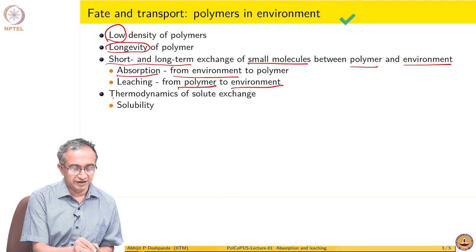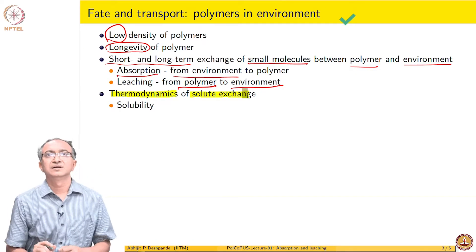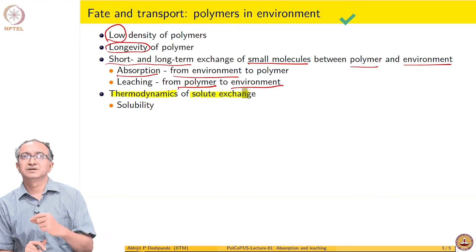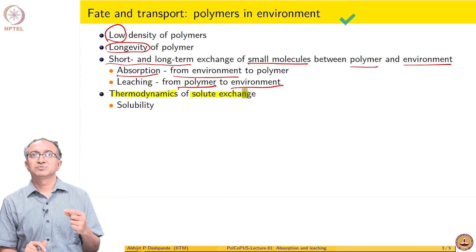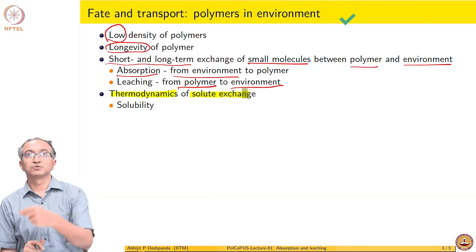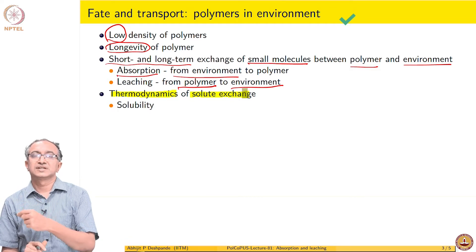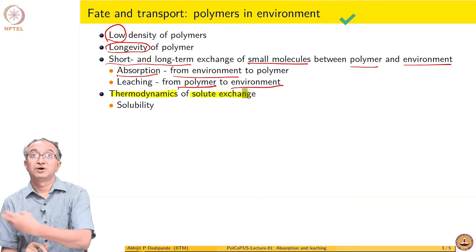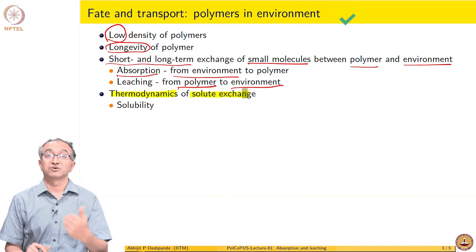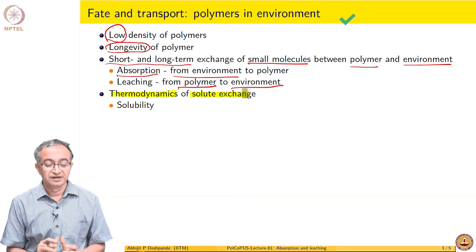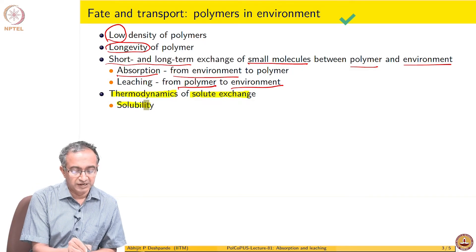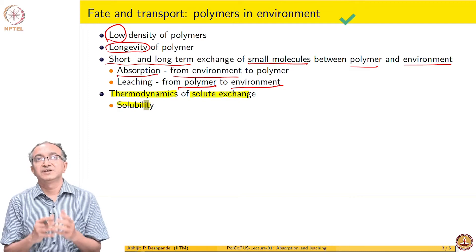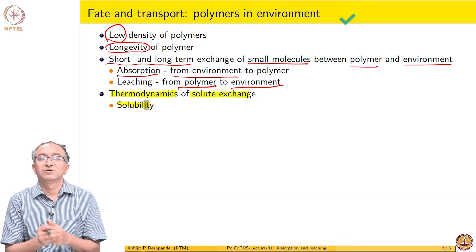So the thermodynamics of solute exchange — whether the dye molecule, which is a pollutant in the river, will come to the polymer; whether the plasticizer molecule in the polymer will go to water; whether some molecule dissolved in water can come to plastic, get absorbed in plastic, and then leach out and go to soil, or get evaporated and exchanged with air or water vapour — all of these are questions where we have to look at what is the solubility of these small molecules in polymeric systems. If solubility is zero, then we do not have to worry — solutes will not get exchanged with polymers.